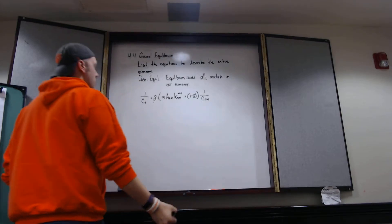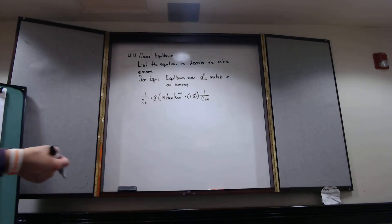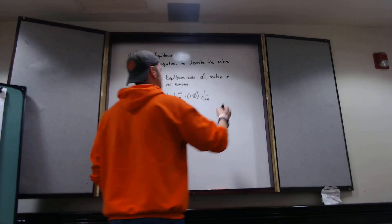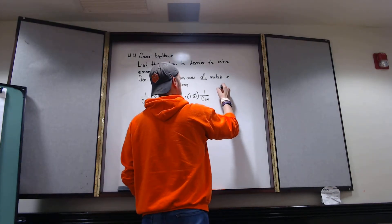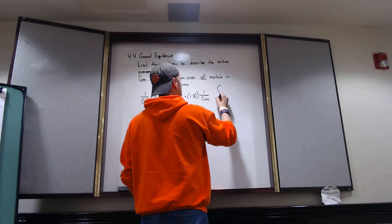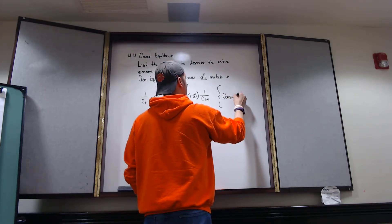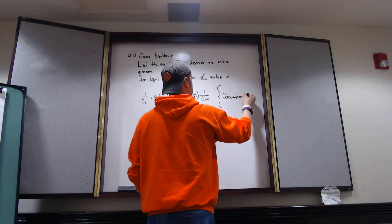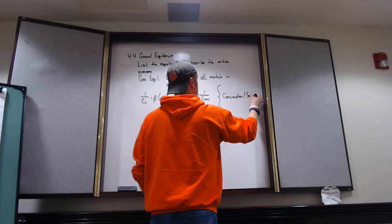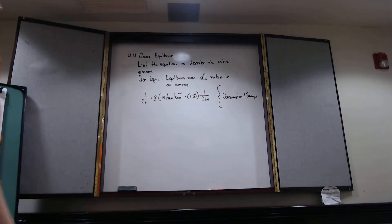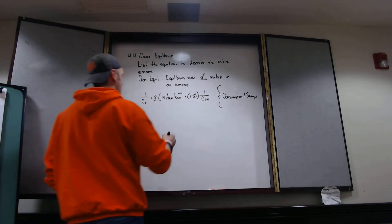That's our Euler equation. This is going to describe how the household wants to save or consume. So that's our consumption savings decisions right there. And so this is how we're going to choose to consume over time.